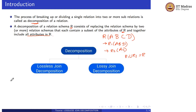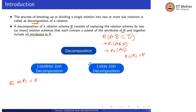If we perform the natural join operation between R1 and R2 and the result is not equal to relation R, then we can say that it is lossy joint decomposition.